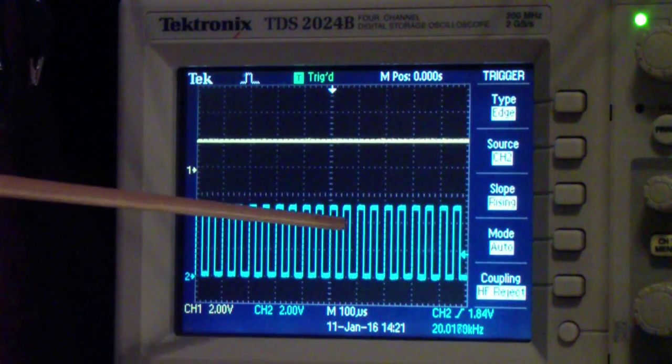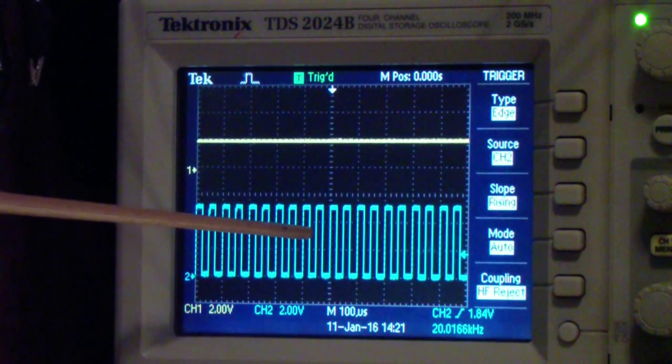The analog discovery's inputs have a little too much loading to work really well on this experiment. There's a solution which I may look at later, but for now I'll continue to use the Tektronix oscilloscope. Now I'm going to turn on the carrier signal.